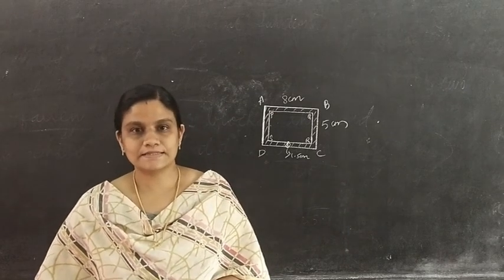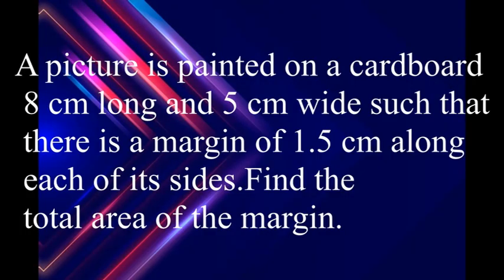The question is: A picture is painted on a cardboard 8 cm long and 5 cm wide such that there is a margin of 1.5 cm along each of its sides. Find the total area of the margin.